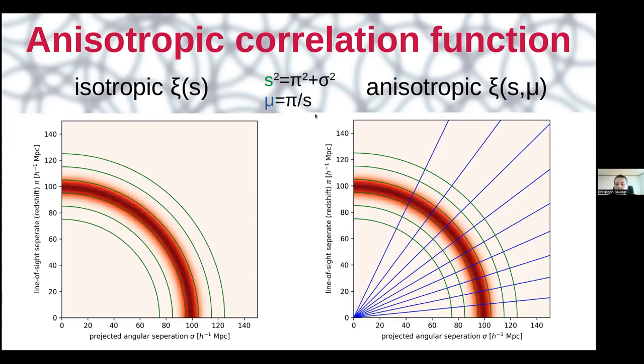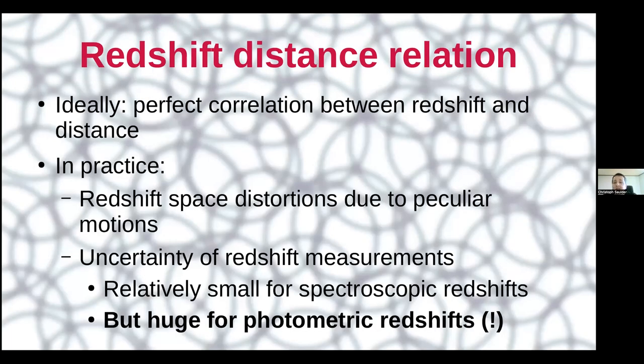So after these very basics, we talk about the anisotropic correlation function. So what the video and everything before explained was the isotropic correlation function. If you look on the y-axis, you have the line of sight separation, which is essentially the redshift. And on the x-axis, you have the angular separation.